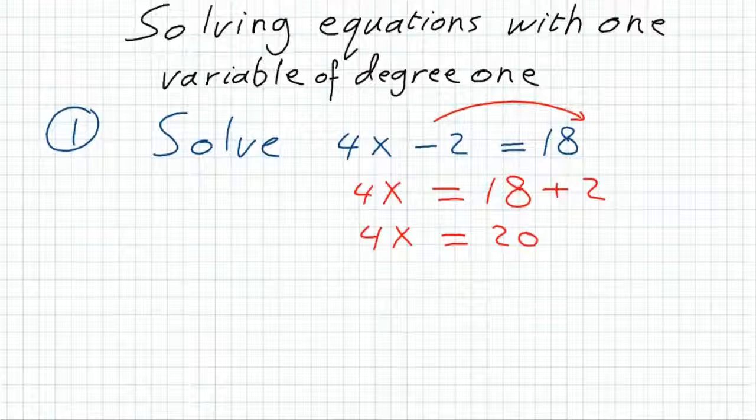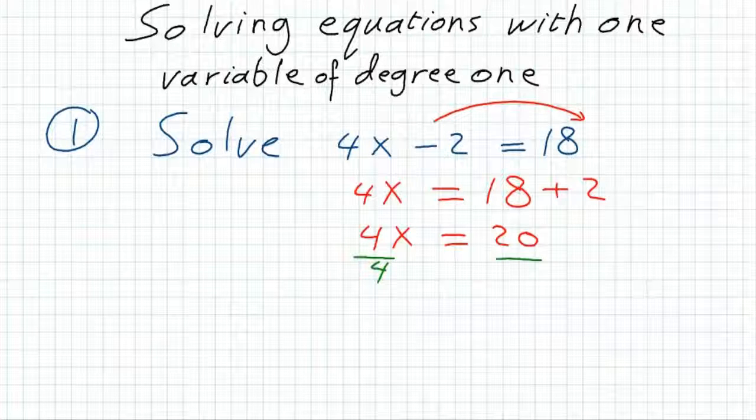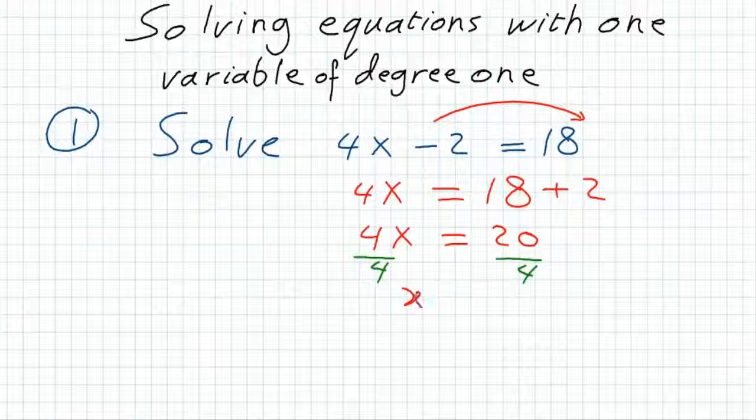Then to get rid of 4 which is multiplied by x, we can divide it by 4, but we must do that also to the other side. So finally, we will find that x is equal to 5.